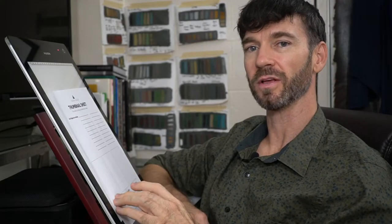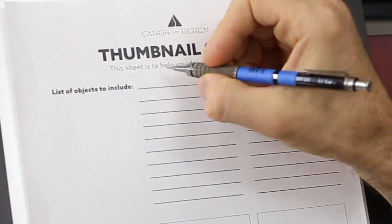Now that our memory is fresh with the design techniques, let's start creating our thumbnails. Let's start by making a list of our objects that we want to include. This composition has a snail, ladybug, a log, vines, leaves, roots, we have a stick.